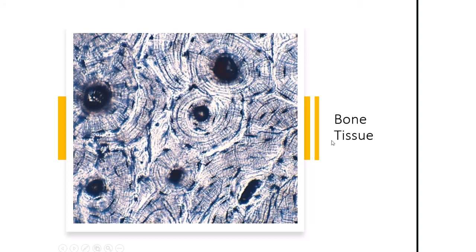Bone tissue under the microscope resembles a tree trunk with rings and circles — this is compact bone. Bones are important for supporting the body, storing minerals such as calcium, and all blood cells — red cells, white cells, and platelets — actually originate from the bone. You'll learn more about that next semester.